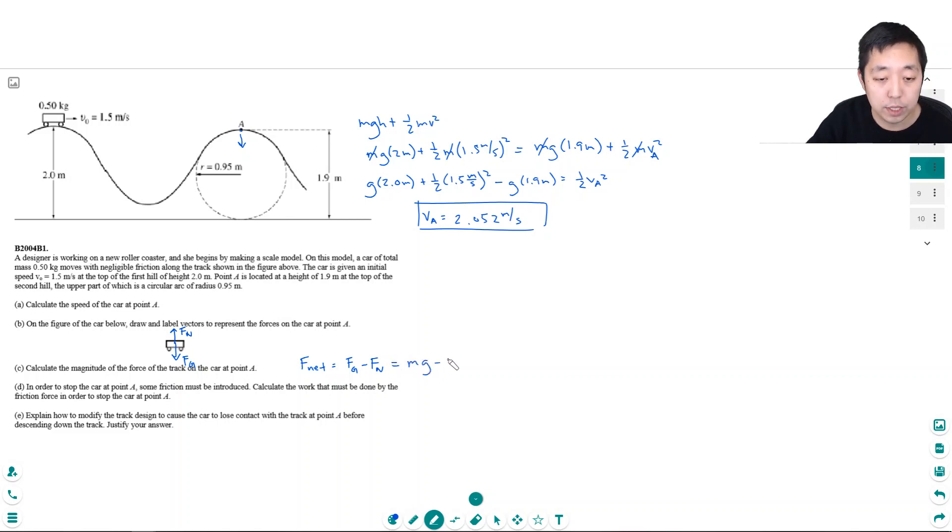And that's equal to m times a. The net force equals ma. That's Newton's second law. But we said the a was centripetal acceleration because it's moving in a circle here. So that's m v squared over r.